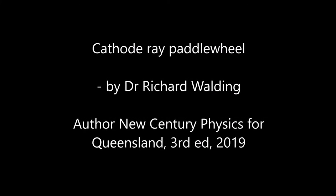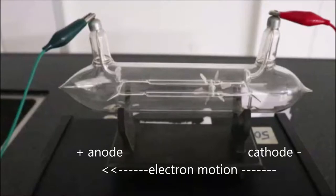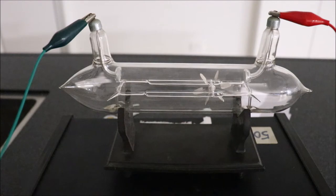This is a simple demonstration of a cathode ray paddle wheel. In this you can see the cathode is on the right and the beam of electrons goes across to the left.